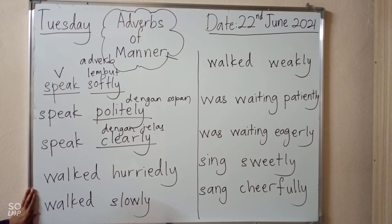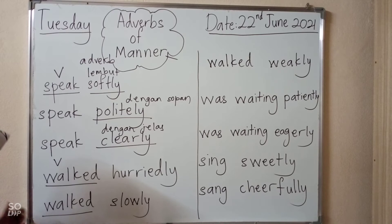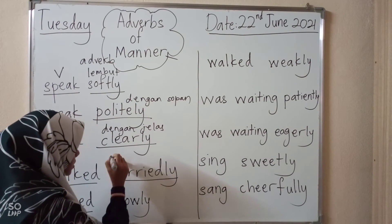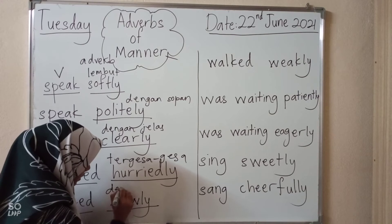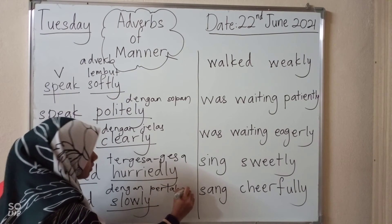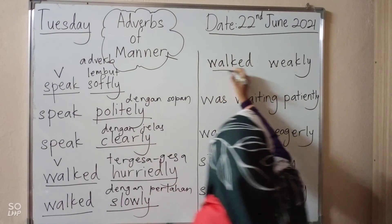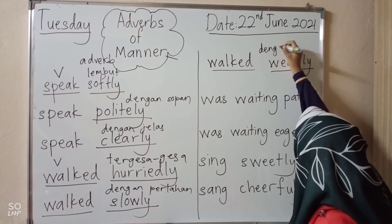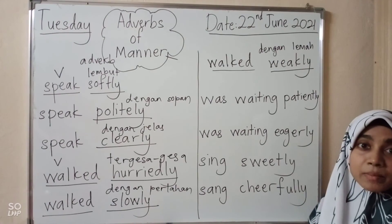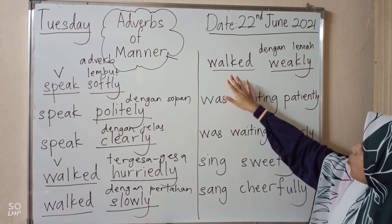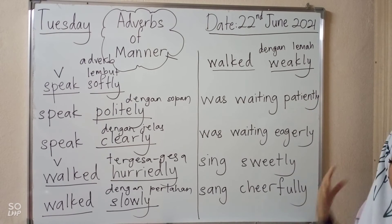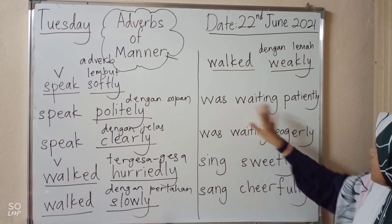Let's look at the second one — 'walked.' Walked is the verb — berjalan. How did the person walk? Bagaimana seseorang tu berjalan? Sama ada dia berjalan dengan tergesa-gesa — walked hurriedly; walked slowly — dengan perlahan; or walked weakly — dengan lemah. Maybe that person is sick, not feeling very well, and you can write in your sentence 'walked weakly' — berjalan dengan keadaan yang lemah, tidak ada kekuatan.